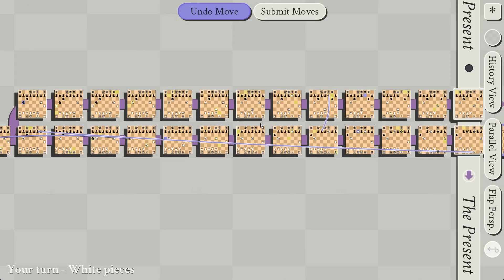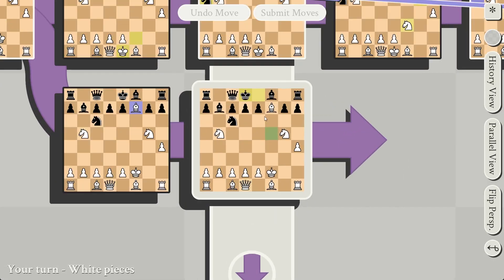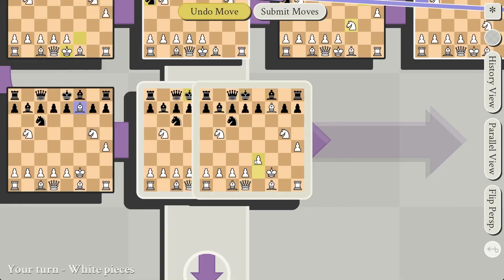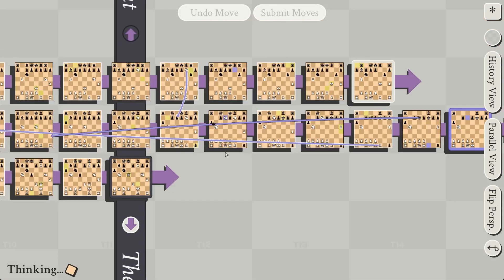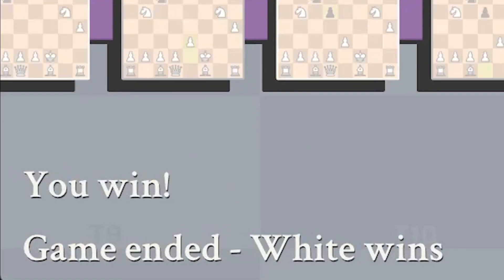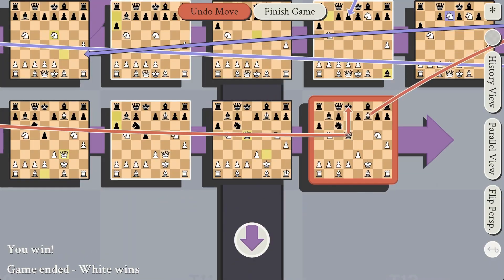So one way to get out of check is by not taking your turn in the timeline where you are checked and moving back in time with a different piece on another timeline to move the present to the past. This makes the board where your king is in check the future and therefore is not checkmate yet because you only have to make moves in the present and you don't have to take a move there yet. This is called stalling because you need to checkmate your opponent before the present catches back up to where you're in check.